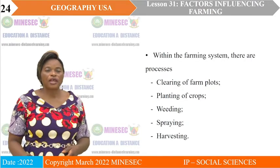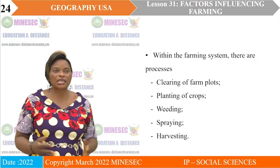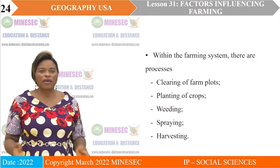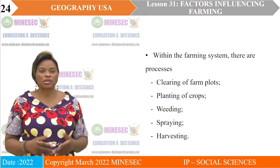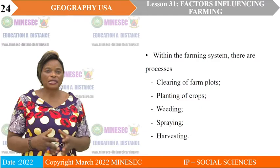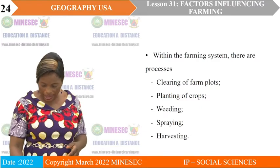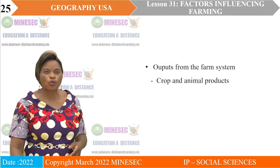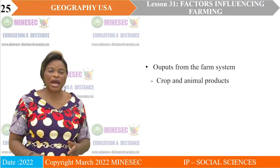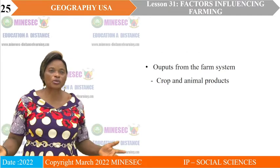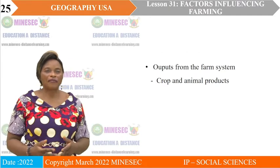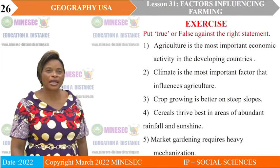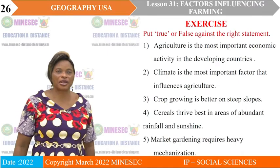Within the farming system, the processes include clearing farm plots, planting crops, weeding, spraying, and harvesting. The outputs from the system are the various crops that are harvested and the animal products like milk, hides, skins, and the rest.